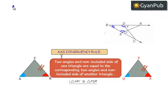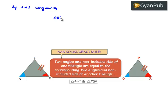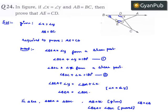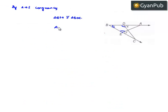Therefore, by the angle-side-angle property of congruency, both triangles are congruent. That is, triangle BEA is congruent to triangle BDC. When two triangles are congruent, their corresponding angles and corresponding sides can be equated. Therefore, the corresponding side AE in triangle BEA is equal to the corresponding side DC in triangle BDC. Hence, AE is equal to DC, which is what was required to prove.